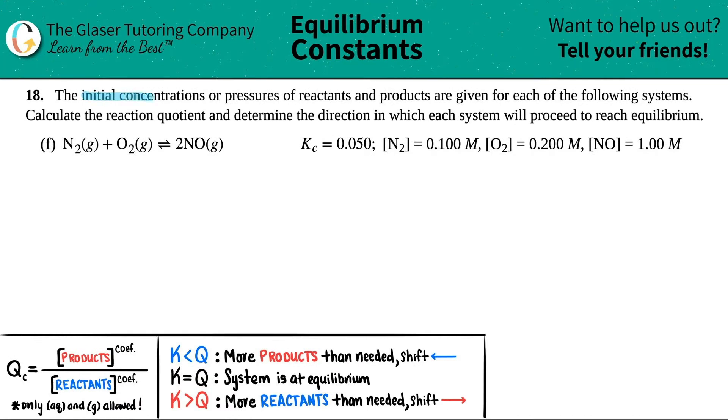Number 18, the initial concentrations or pressures of reactants and products are given for each of the following systems. Then we have to calculate the reaction quotient and determine the direction in which each system will proceed to reach equilibrium.